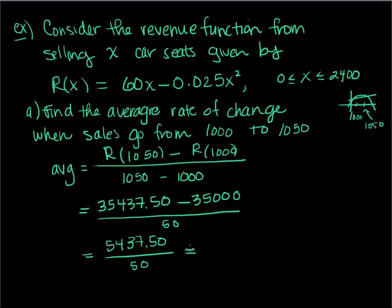So what is my average rate of change and what I want you to make sure you're able to do is I want you to be able to describe your average rate of change using units. This is 108.75. The numerator is the revenue, so this is money, and down here this is the number of seats sold. So this is $108.75 per seat sold. That's my average rate of change when I go from 1000 to 1050.